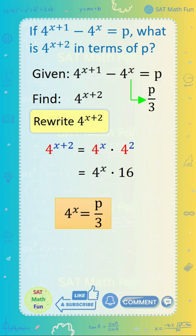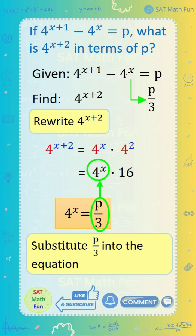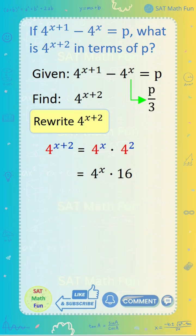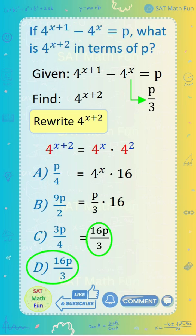We know from earlier that 4 to the power of x equals p over 3. So substitute p over 3 into the equation. Multiply p over 3 by 16. There you go. The answer is 16p over 3.